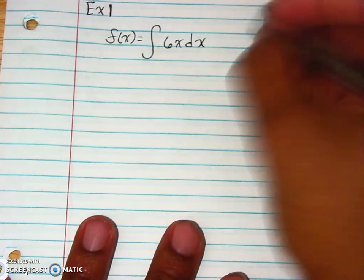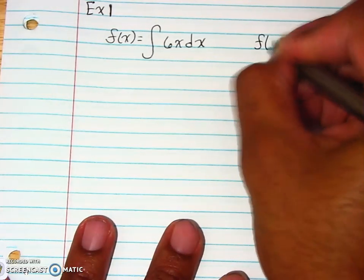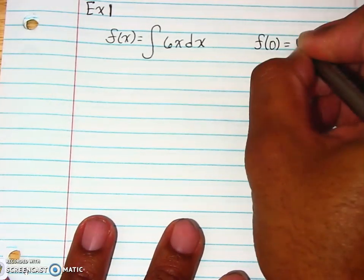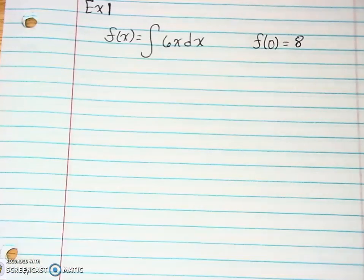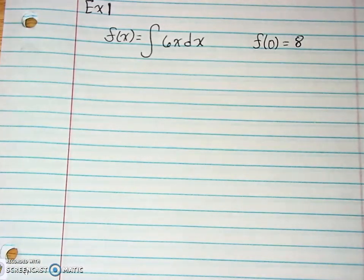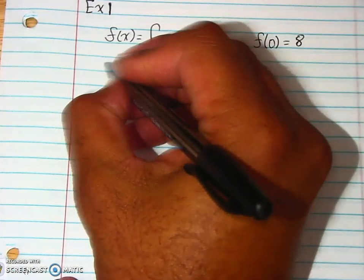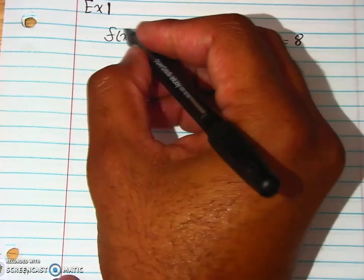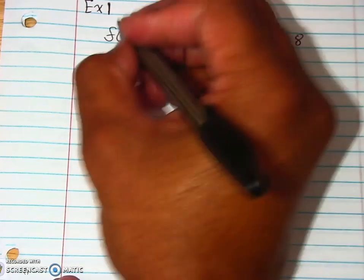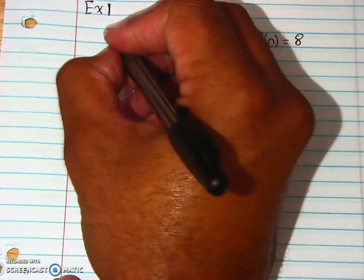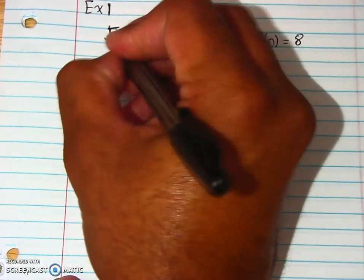All right. And then also, they give you the initial value, which is 0, f of 0 equals 8. All right. So that's going to find the antiderivative. It's going to be simple and easy. All right. So we've done this before. Now, remember when it comes to, and this should actually be a capital F. Whenever we find our antiderivative, this should be a capital F right there.